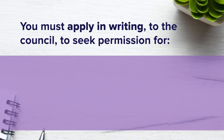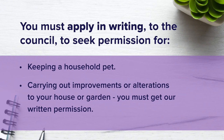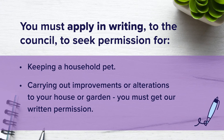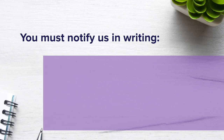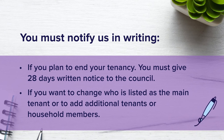You must apply in writing to the council to seek permission for keeping household pets or carrying out improvements or alterations to your house or garden — you must get written permission. You must notify us in writing if you plan to end your tenancy, giving 28 days written notice to the council. If you want to change who is listed as the main tenant or to add additional tenants or household members, you must also notify the council.